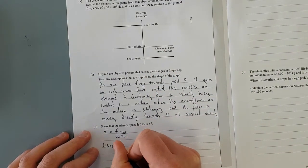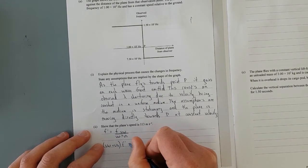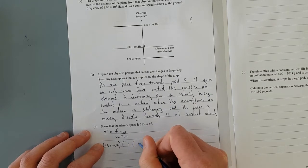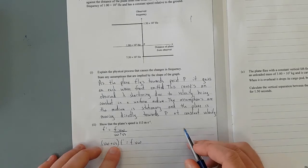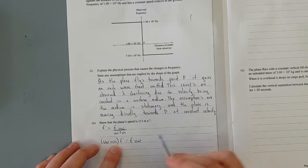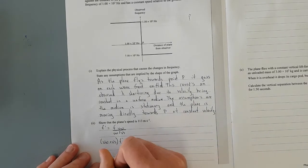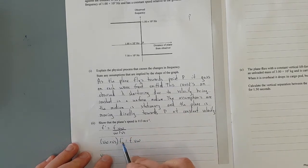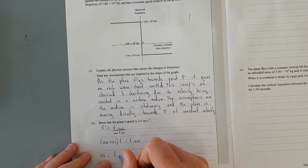Velocity of the wave plus velocity of the source times the observed frequency is equal to the actual frequency times the velocity of the wave. And we're trying to find the velocity of the source. So what do we need to do? Expand this out and then divide by F. So we get Vs.